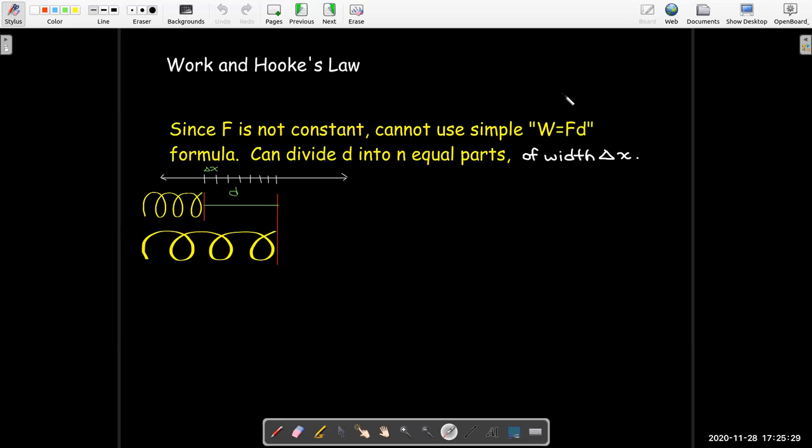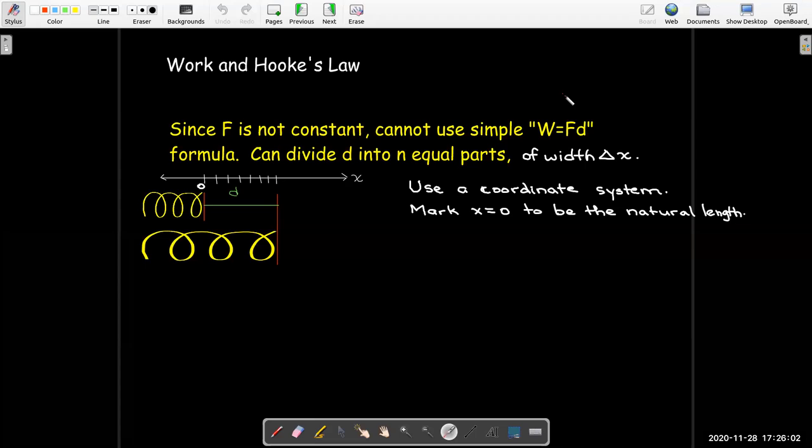So we're going to do what we've done throughout this class. We're going to take that distance d, and we're going to break it up into many small parts. So we're going to have n equal distances, each of width delta x. And then to help us do the analysis, we're going to impose a coordinate system. We're going to say that when at the natural length, that's going to be x equals 0. And we're going to use b for the new length after it's been stretched or compressed.